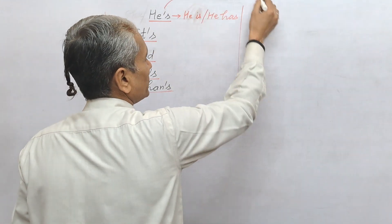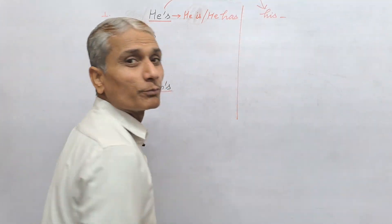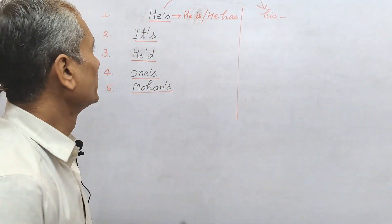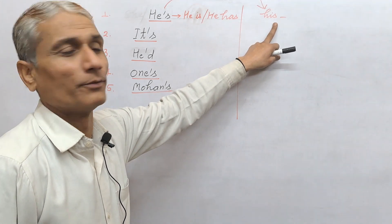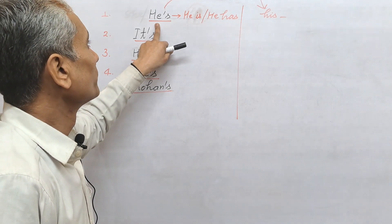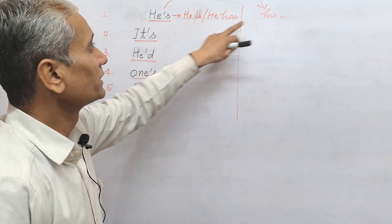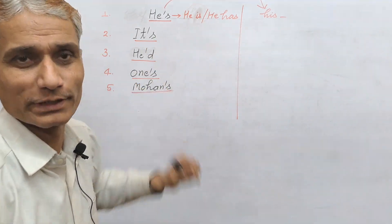Because for he, the standard possessive his is available. His possessive form is available with us in standard form. So he's won't indicate his. It will indicate he is or he has. Clear?